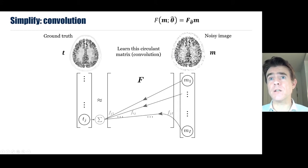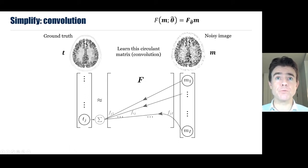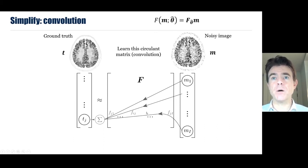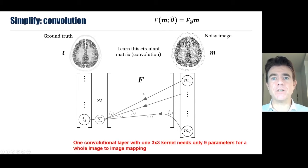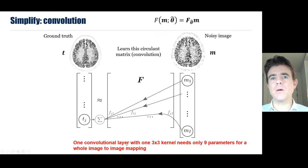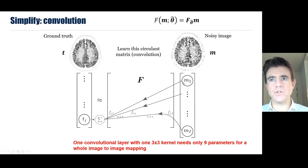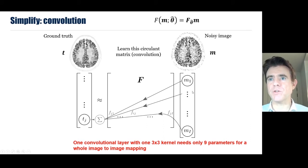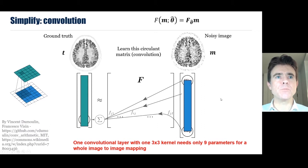As a simpler start, instead of a sinogram or k-space I'll consider a noisy image and look for a mapping to denoise it — mapping from a noisy image to a ground truth image via a simple convolution. This makes matrix F a circulant matrix with very few parameters. For example, a three-by-three convolution kernel needs only nine parameters to do an entire image-to-image mapping. This convolution operator is an example of a convolutional layer, though a layer typically has many kernels.